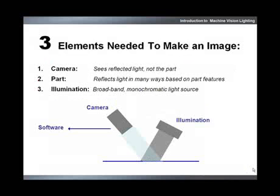The basic elements needed to create an image are a camera, a part, and some type of illumination light source. Choosing a light source is dependent on your application and inspection environment. Illumination light sources can be anything from light emitting diodes or LEDs, fluorescent bulbs, incandescent fiber optics, or even sunlight in some applications.